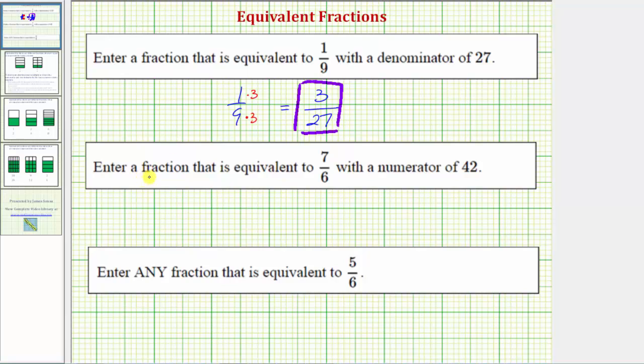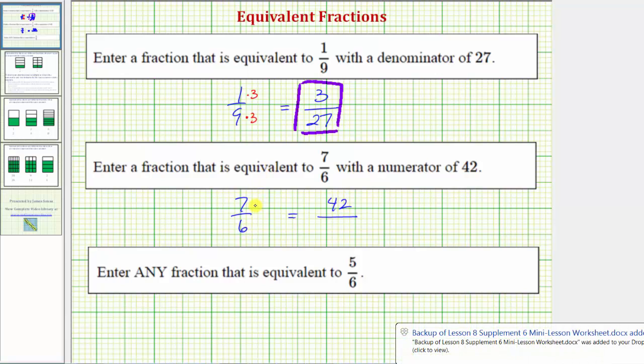Our next example, we're asked to enter a fraction that is equivalent to 7/6 that has a numerator of 42. Now looking at the numerators, because 7 times 6 equals 42, to determine the fraction that is equivalent to 7/6 with a numerator of 42, we need to multiply the numerator and denominator by 6.